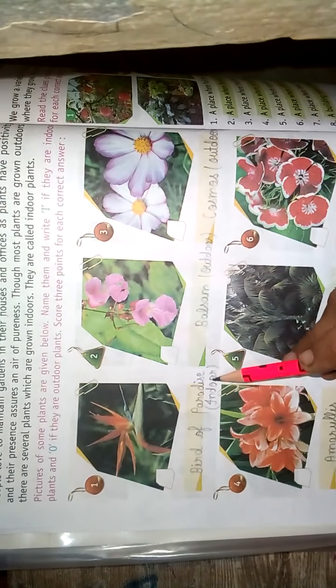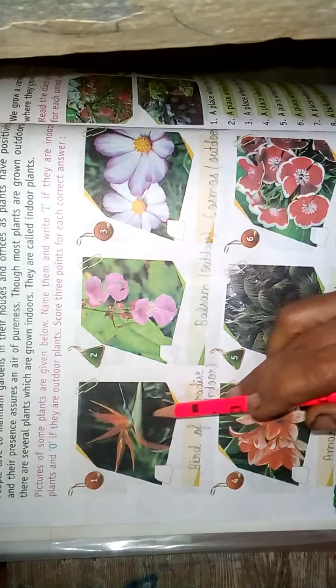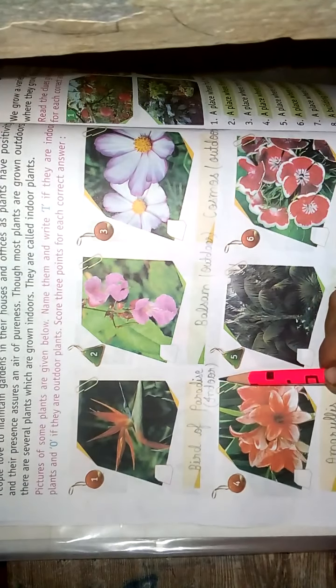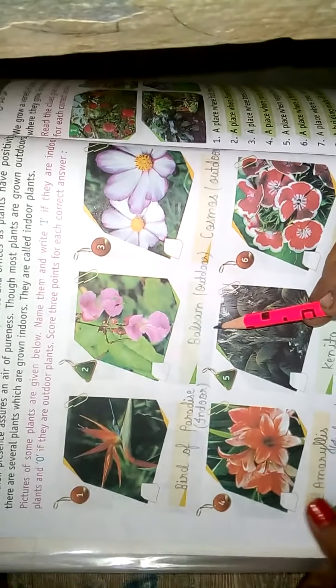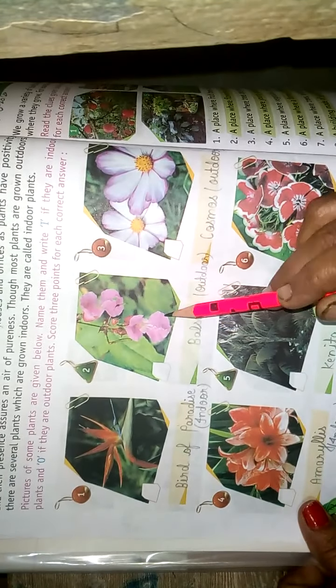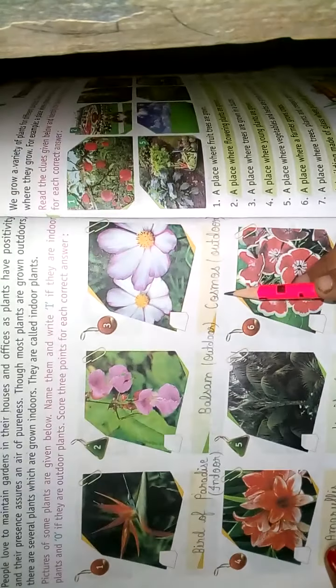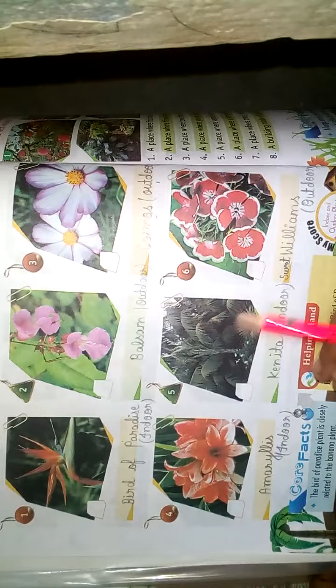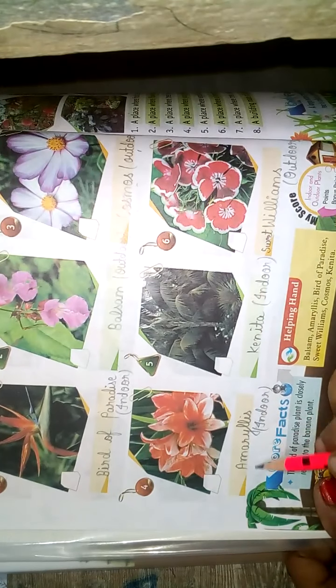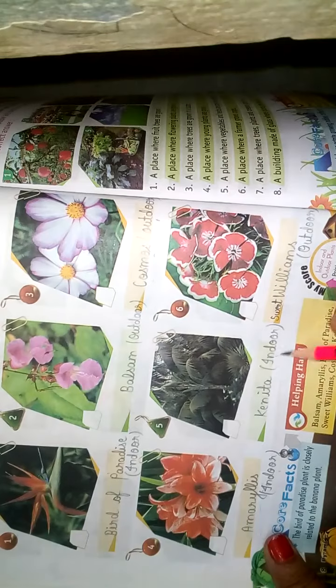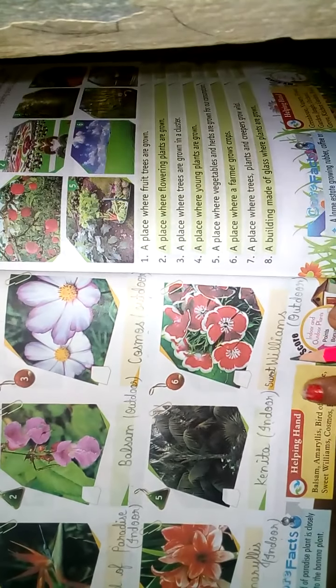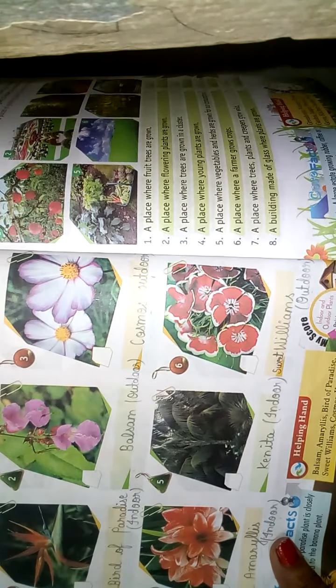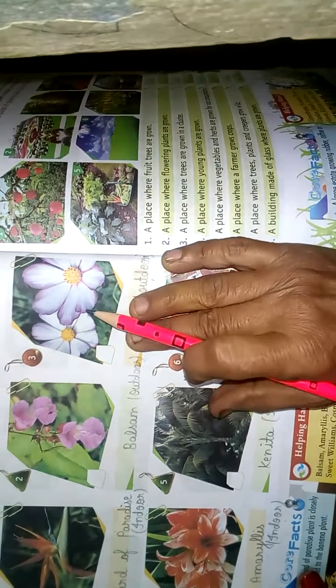Birds of paradise — yeh ghar ke bahar lagaya jata hai, outdoor hai. Camelias — yeh bhi outdoor hai, ghar ke andar nahi lagaya jaega. Amaryllis — yeh aapka indoor flower hai. Canita — indoor. Sweet Williams — yeh bhi outdoor hai. Toh kuch outdoor plants hain aur kuch indoor plants hain. Thank you.